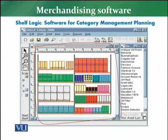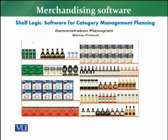You have to give the instructions to the software — how many categories you are going to carry and how much business you expect. On the basis of that, the system will guide you and help you in creating the shelf logic: how much space to give to one article versus another. This is an example of a planogram — in the early stage when you first make it, it is a dummy without any pictures.